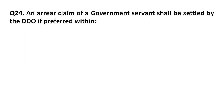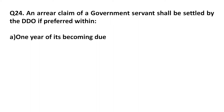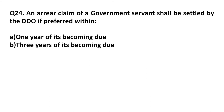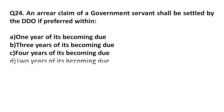Question 24: An earlier claim of a government servant shall be settled by the DDO if preferred within how many years? Option A: One year of its becoming due. Option B: Three years of its becoming due. Option C: Four years of its becoming due. Option D: Two years of its becoming due. Answer: Option D, two years of its becoming due.